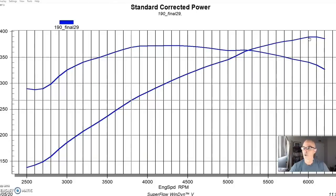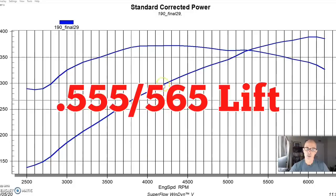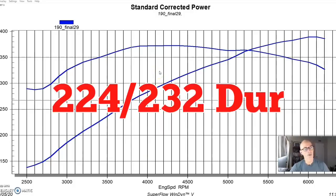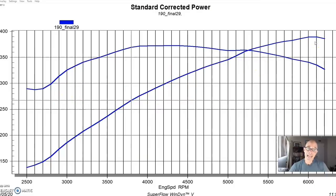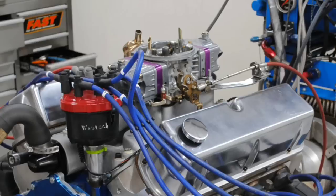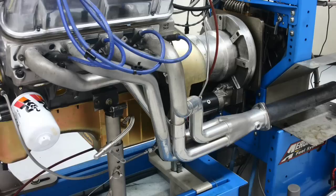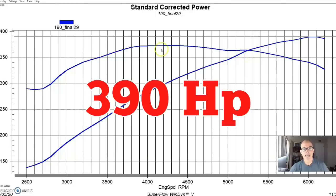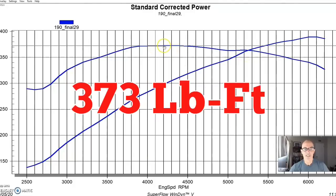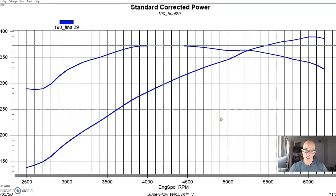In this case we had our Extreme Energy 274 cam that we usually run on small block Ford applications. This was a hydraulic roller. It's a mild cam, works very well for a five liter. This combination also had as-cast Dart Pro 190cc intake port heads on it, a dual plane intake, a 750 Holley, and inch and three-quarter long tube Hooker Super Comp headers. Equipped in this manner with 190cc as-cast Dart heads, our combination produced 390 horsepower and 373 foot-pounds of torque.